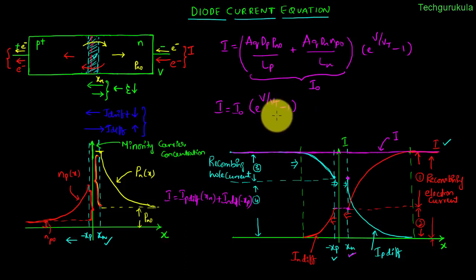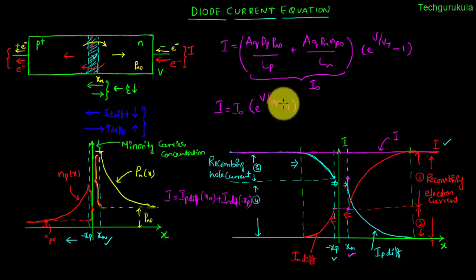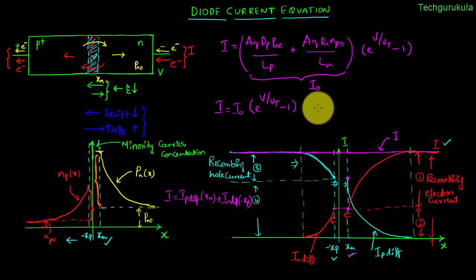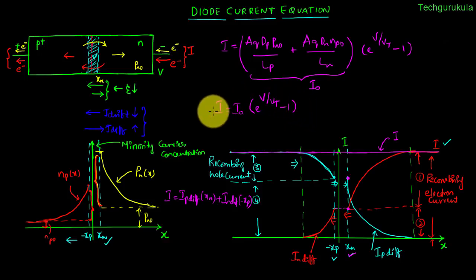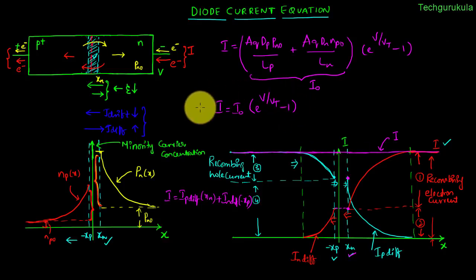We can write I = I_0·(e^(v/V_T) − 1). This is the diode current equation — specifically the ideal diode current equation, because we made many assumptions to arrive at it. The diode which satisfies all these conditions is called an ideal diode. Even though we did the entire derivation assuming v is positive, this equation is valid even when v is negative.